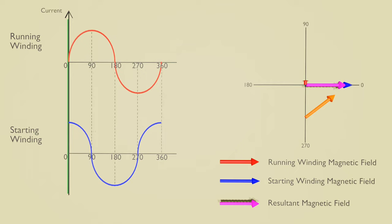At zero degrees, the current in running winding is zero but current in starting winding is maximum, so the resultant magnetic field is at zero degrees. At 45 degrees, the current in running winding is average and current in starting winding is average, so the resultant magnetic field is at 45 degrees. At 90 degrees, the current in running winding is maximum but current in starting winding is zero, so the resultant magnetic field is at 90 degrees.